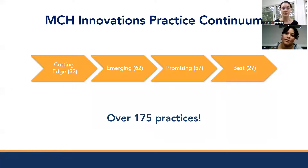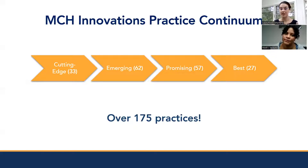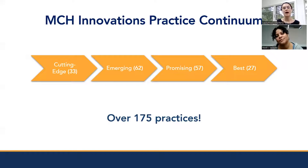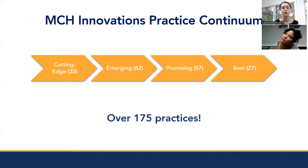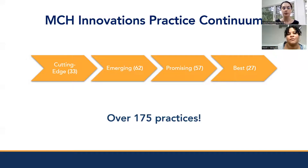Currently in our database, we have over 175 practices. The bulk of these land in the emerging and promising section, with the fewest being a best practice, since that designation is the most rigorous to receive. Cutting-edge practices are in the database for two years — they are not featured permanently — but we work with cutting-edge practices through a cutting-edge learning community to support their work and help them grow.